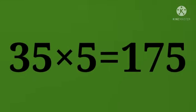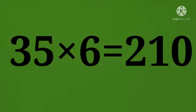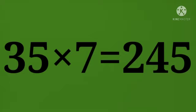35 times 5 equals 175. 35 times 6 equals 210. 35 times 7 equals 245.